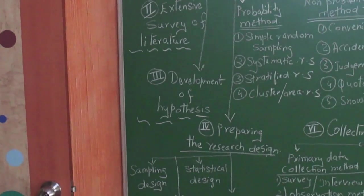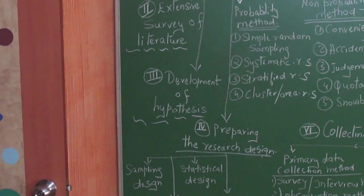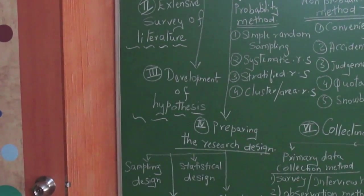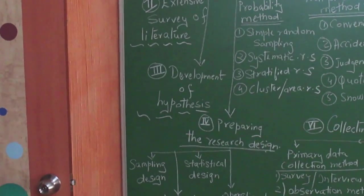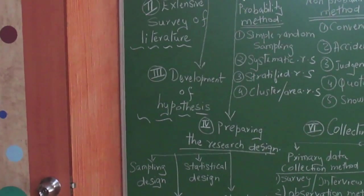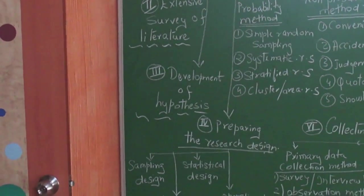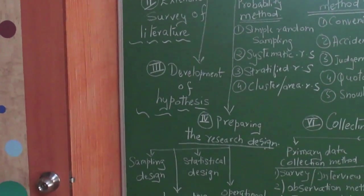Once the research problem is properly founded, then you go to the third one: development of hypothesis. Hypo means less, thesis means a theory. So a hypothesis is something which is a little less than a theory.